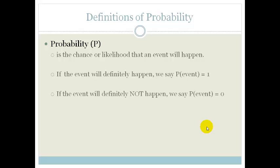However, if the event will definitely not happen, we can say the Probability of the event is 0. So what is the Probability that I will be in Hawaii tomorrow? Well, the Probability of that event is 0.